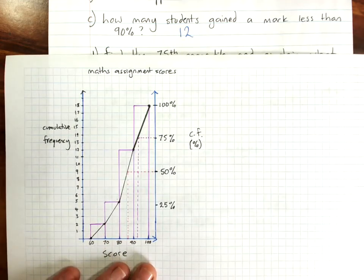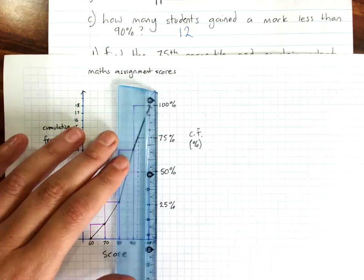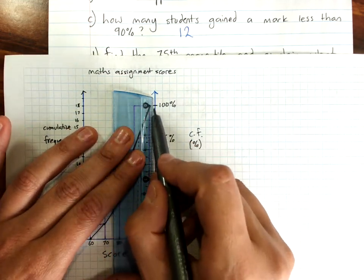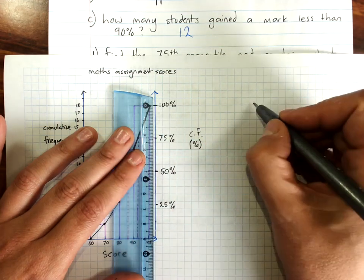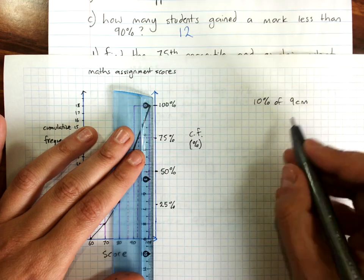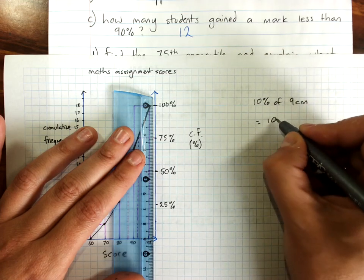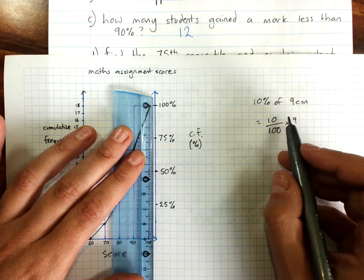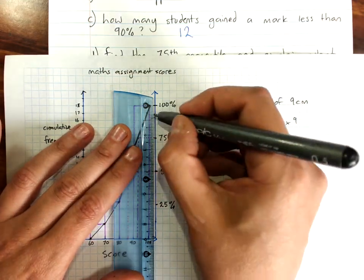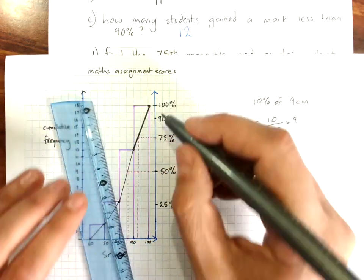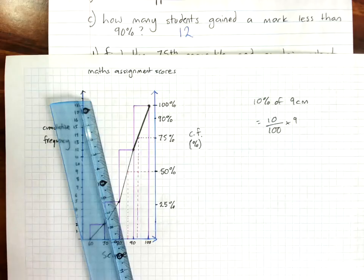Now, you remember I've got 9 centimeters here. I would need to work out what distance down would be 10%. So, 10% of 9 centimeters would be 10 over 100 times 9 or 0.9 of a centimeter. So, just there is 90% and that would give me my top 10%.